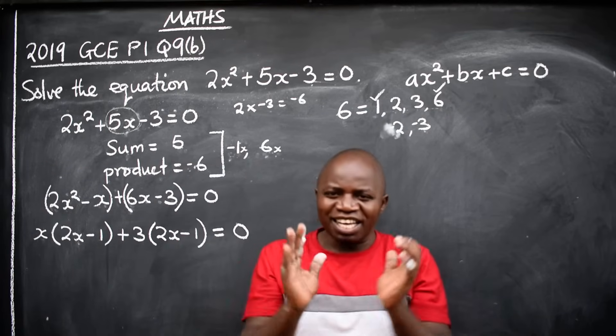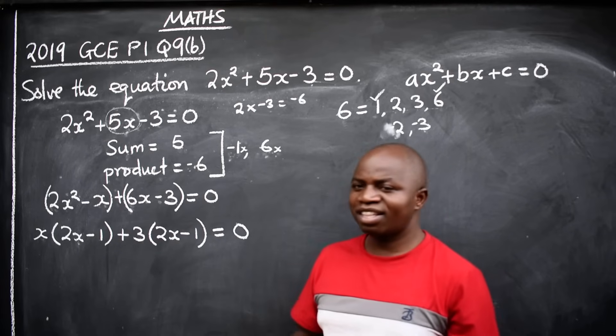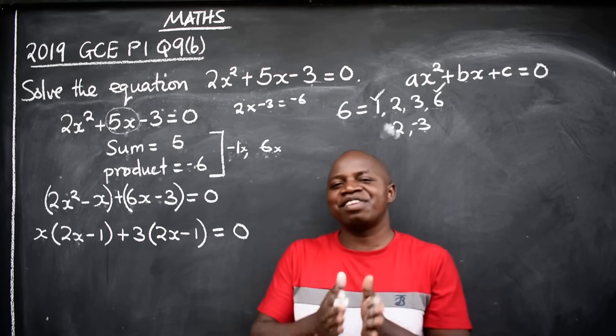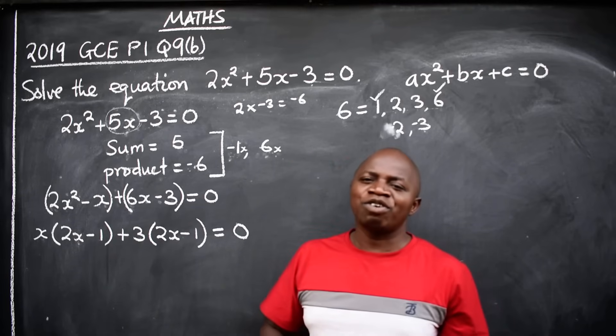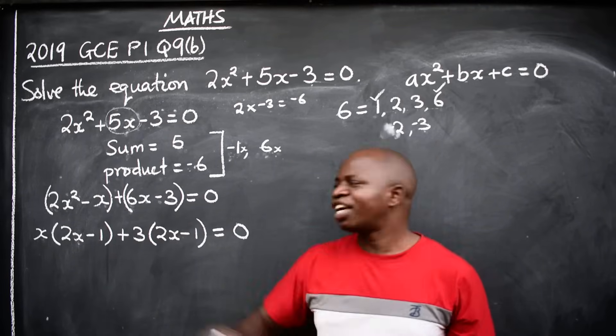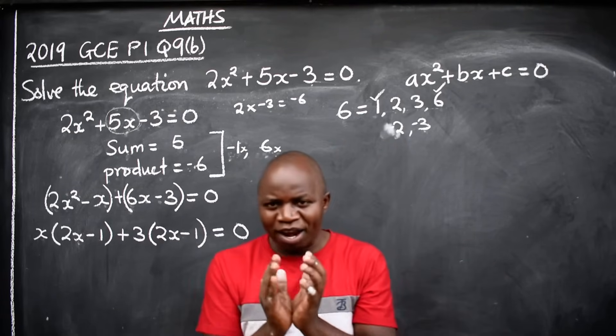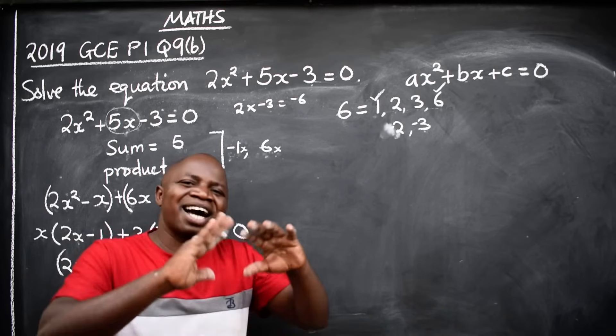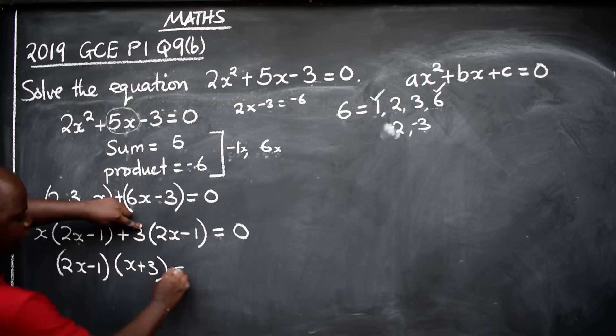Now let's check what we have inside the brackets. Are they the same? Check. Are they the same? Yes. If they are the same, then you are moving in the right direction. But if you find you have different factors here, you have made a mistake. Here it should be the same, always the same. Now since they are the same, you just pick one. So we pick one: (2x - 1). You also open another bracket for those outside. So we have (2x - 1)(x + 3) = 0.